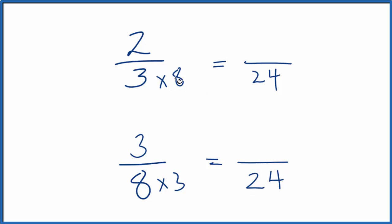But I can't just multiply by 8. I have to multiply the top by 8 as well. That way, 8 over 8, if you divide 8 by 8, you get 1. So I'm just multiplying this by 1. It doesn't change the actual quantity. So 2 times 8 is 16. 3 times 8, 24. And 2 thirds is equivalent to 16 over 24.